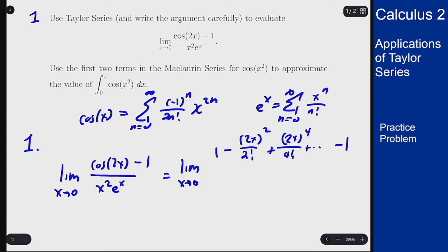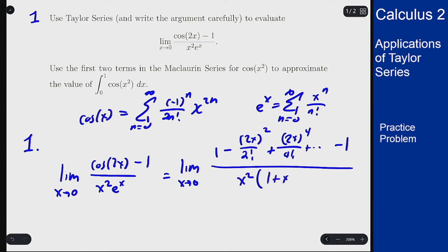Then there's a minus 1 from the extra minus 1 on the top, divided by x² times the first few terms of the eˣ series: 1 + x + x²/2.